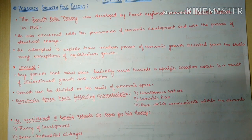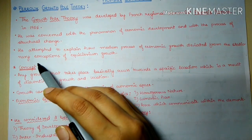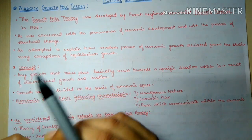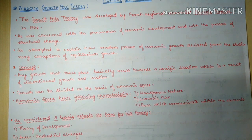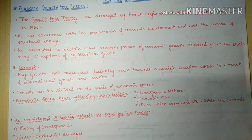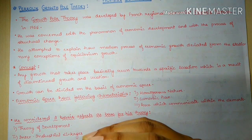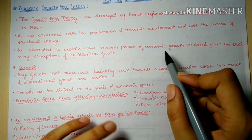In this theory he attempted to explain how the modern processes of economic growth deviate from the stationary conception of equilibrium growth. Previously there were models about how growth occurs in equilibrium form, but he tried to modify this and explained how the modern processes actually work in economic growth.